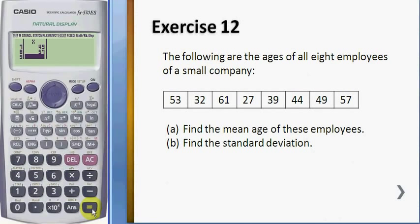After you key in all the data, what you need to do is you press AC and then you press shift one stat or the function of stat, and number five variable we have the x bar which is the mean.